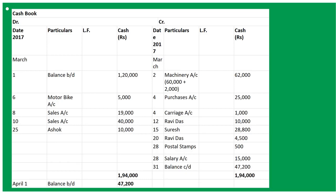On March 20th: paid to Ravidas and discount received 4,500, so By Ravidas 4,500 on March 20. Discount received entry will be done in working notes. March 25th: cash collected from Ashok 10,000, To Ashok 10,000. March 28: purchased postal stamps 500, By Postal Stamps Rs. 500. March 28: salary 15,000.